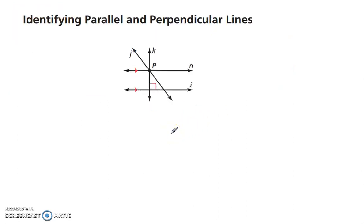Alright, identifying parallel and perpendicular lines. If you have a line, and in the same plane you have a point, through that point there are endless lines, but only one line that is parallel to the first line. So line N is parallel to line L. It goes through point P.